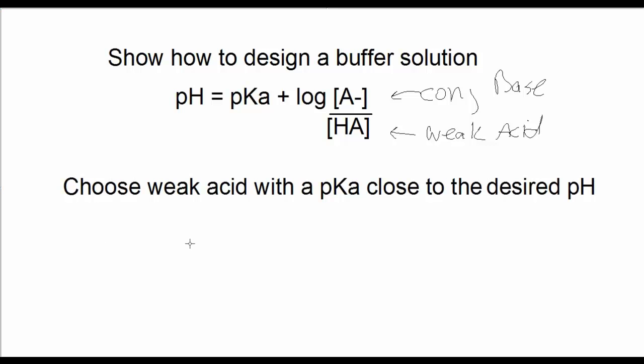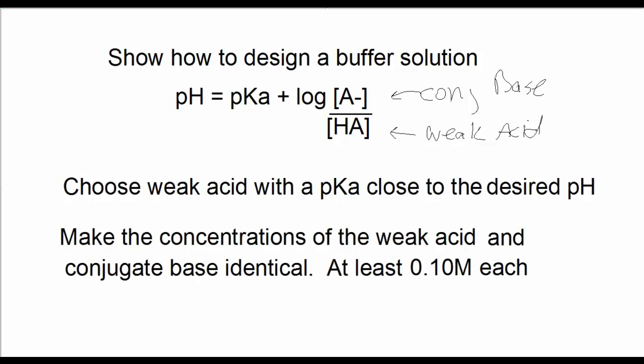The other thing you want to keep in mind is to choose a weak acid with a pKa close to that of the desired pH of your buffer. And the other is to make the concentrations of the weak acid and the conjugate base identical. Make them at least 0.1 molar each. So we have three things: the equation, which is generally called the buffer equation, choosing a weak acid with a pKa close to the desired pH, and then making sure that the concentrations of both the conjugate base and weak acid are approximately the same and are at least 0.1 molar each.